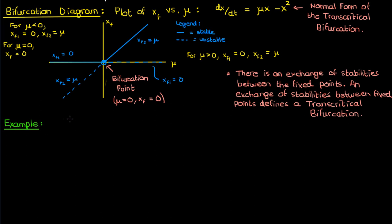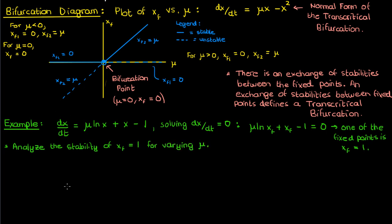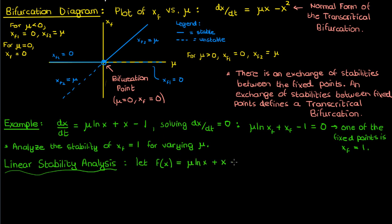Let's illustrate this with an example. Consider the differential equation dx/dt equals μ ln(x) plus x minus one. Solving dx/dt equals zero reveals that one of the fixed points is at xf equals one. Our goal is to analyze the stability of xf equals one for different values of μ, beginning with a linear stability analysis.